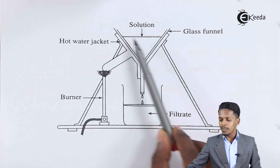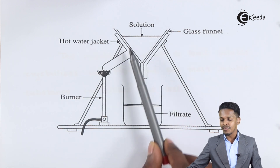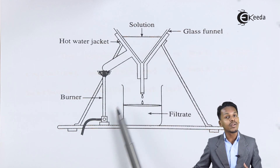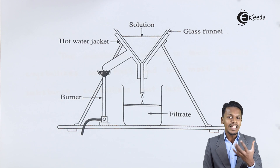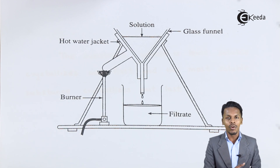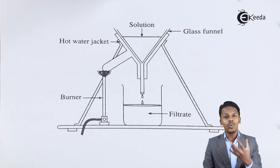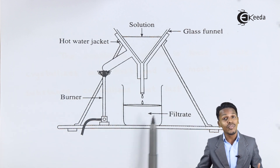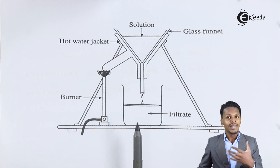That solution is passed through a filter while maintaining high temperature. Glucose is the least soluble in ethanol, so it will crystallize out first. Fructose, being more soluble in ethanol, will remain in the filtrate.